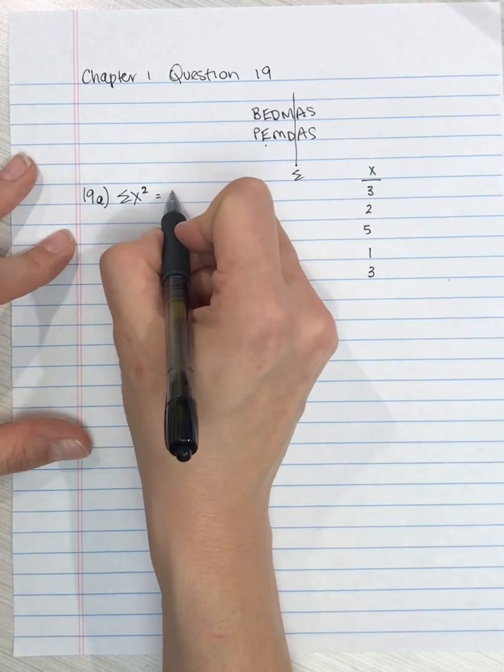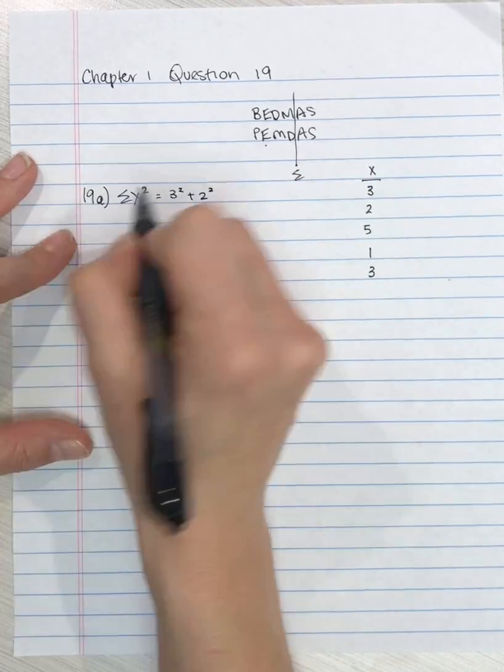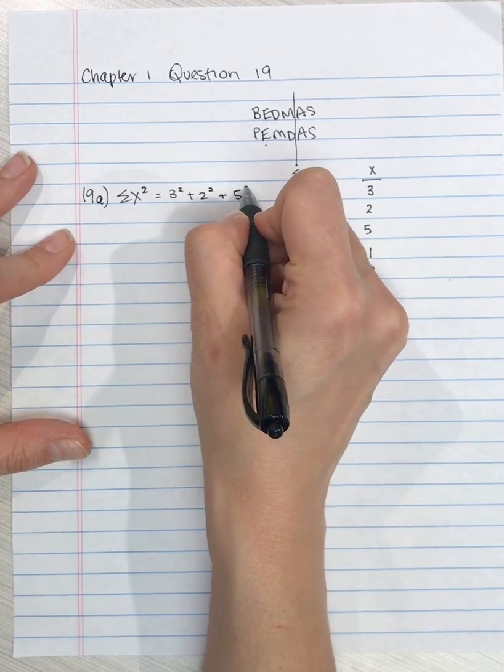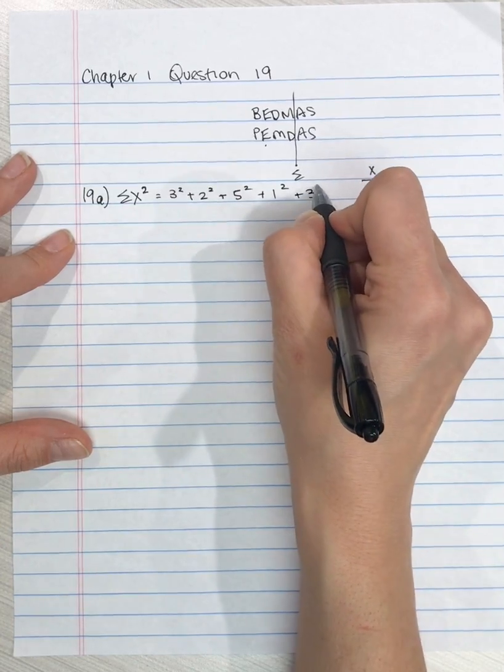So we take 3 and square it, plus 2 squared, plus 5 squared, plus 1 squared, plus 3 squared.